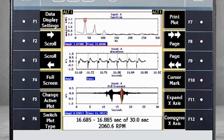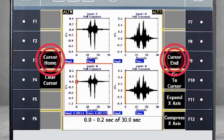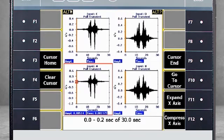When I go to Alt 2, cursor home and cursor end moves the cursor to the beginning or the end of the active plot. Clear cursor removes the cursor from the plot.